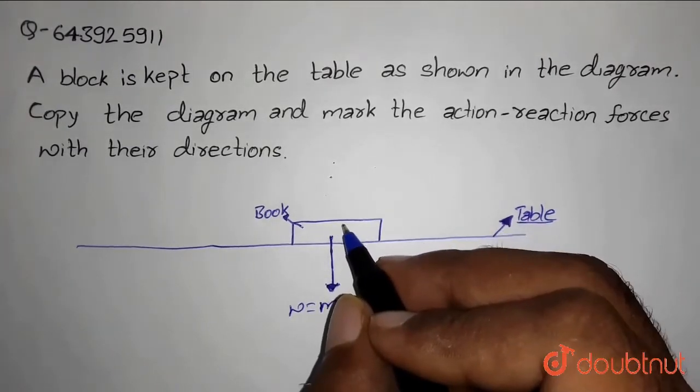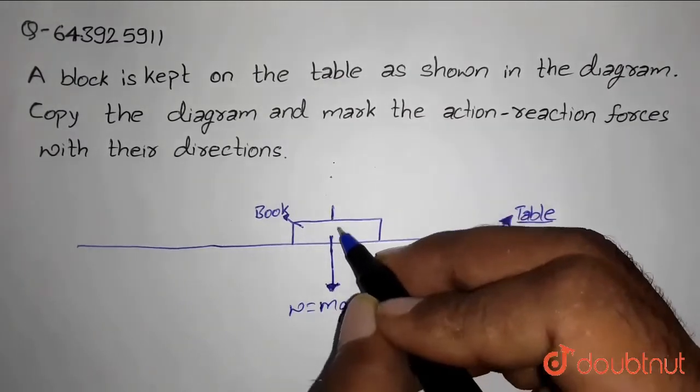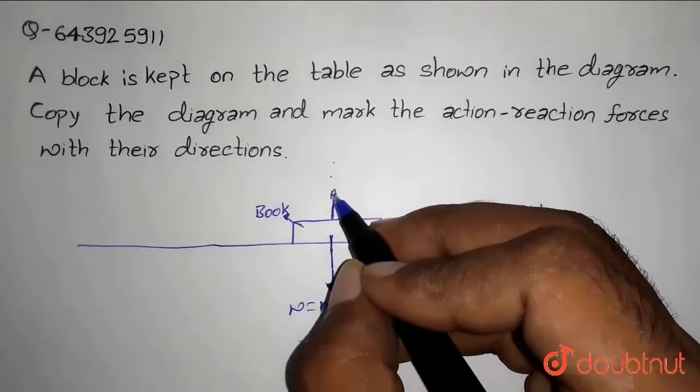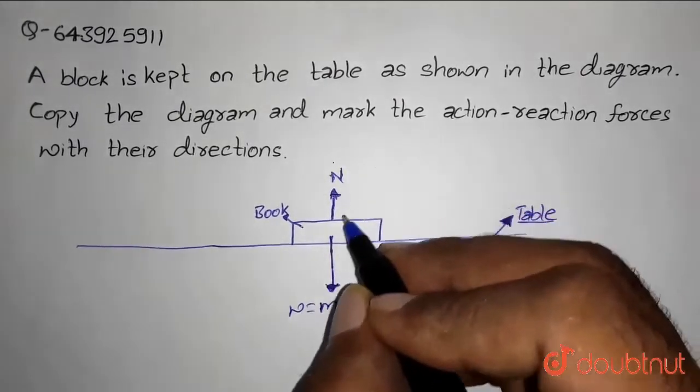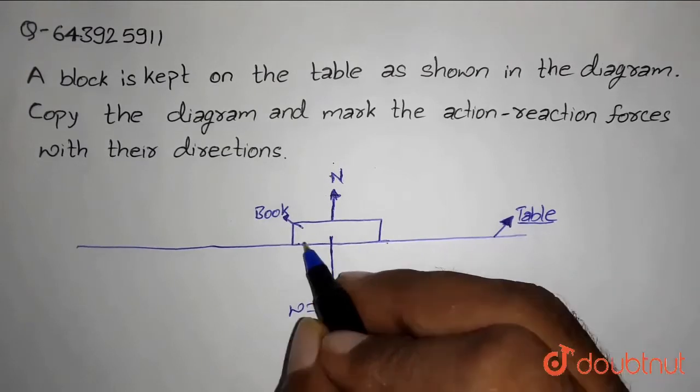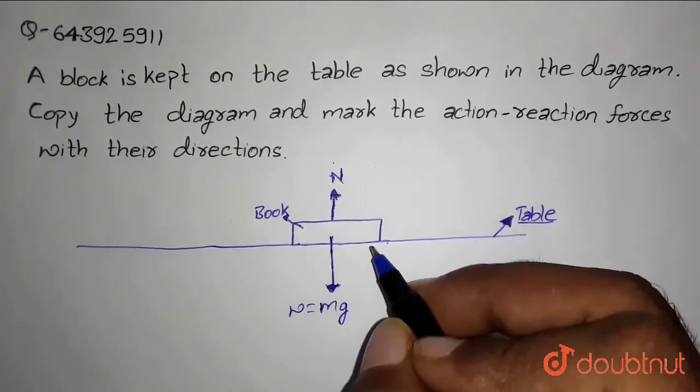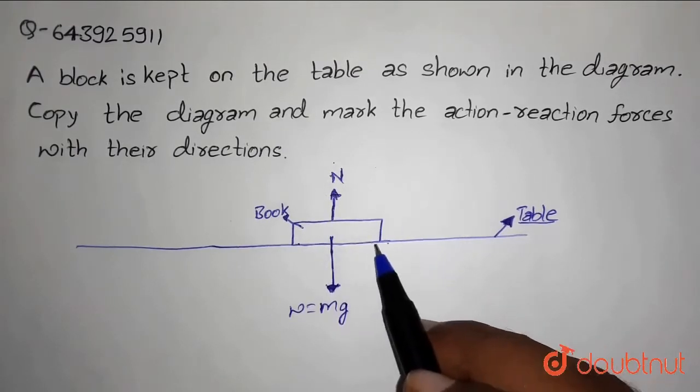And a normal reaction force will be acted by the table on the book. That will always be perpendicular to the surface on which it is there. So in this case, the normal reaction force will be perpendicular to the table.